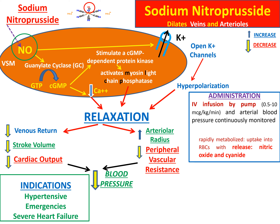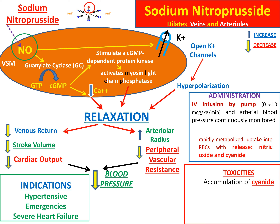Sodium nitroprusside is rapidly metabolized through uptake into red blood cells, releasing nitric oxide and cyanide. The toxicity is predicted by accumulation of cyanide, which causes metabolic acidosis, dysrhythmia or arrhythmia, severe hypotension, and potentially death.